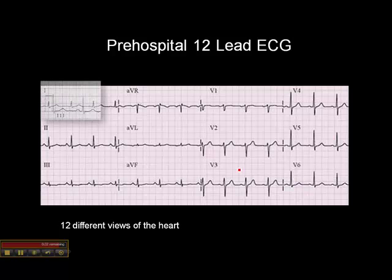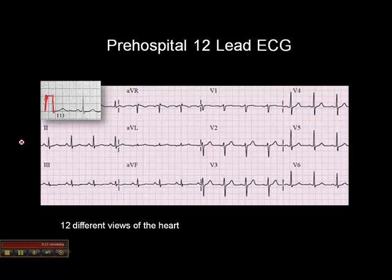Every ECG has a standard on it — a line that goes up, across, and comes down — and that should equal one centimeter or one millivolt. If it's not exactly one centimeter in height, then your 12-lead ECG machine is not properly calibrated. Most monitors today are sufficiently well-maintained that they're almost always calibrated, but we always look for that standard to verify the machine is properly calibrated.